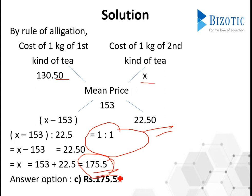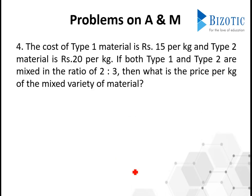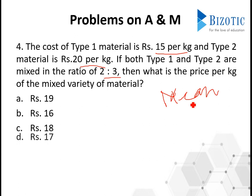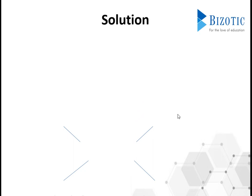So this gives the right answer: option C, 175.50. I hope this is clear. Now let's move on to question number 4. The cost of one type of material is Rs. 15 per kg and type 2 material is Rs. 20 per kg. If both type 1 and type 2 are mixed in the ratio 2:3, what is the mean price? The mean itself is missing, and we find it by the allegation method.